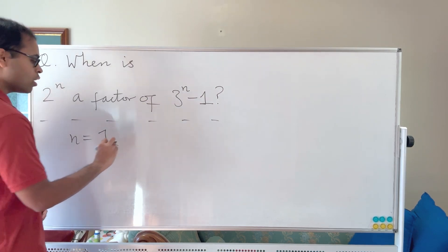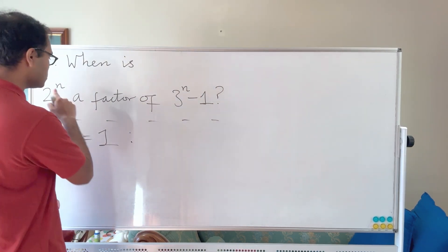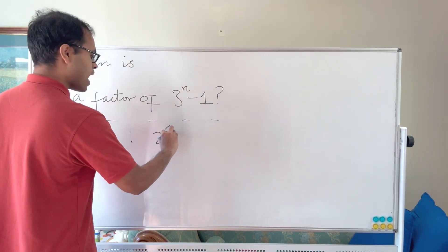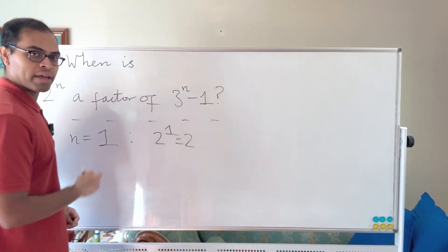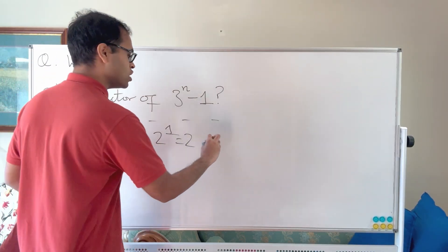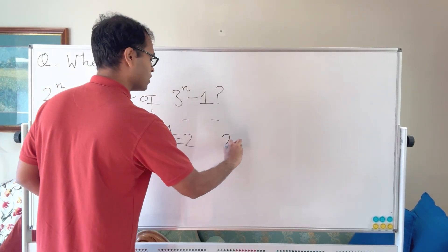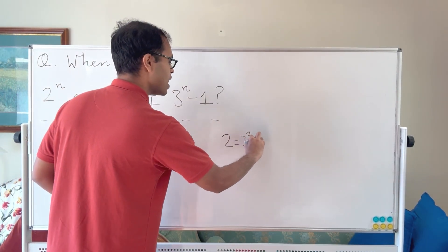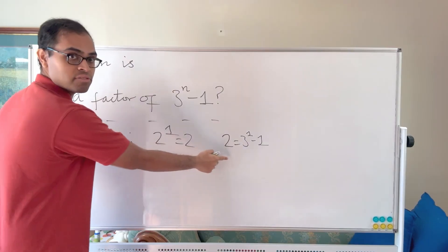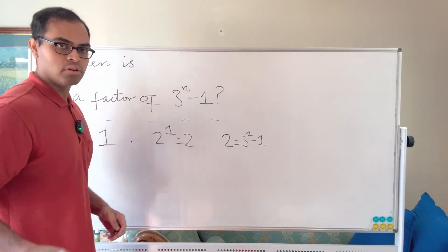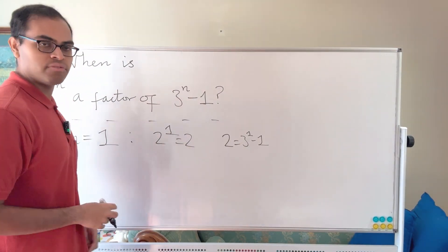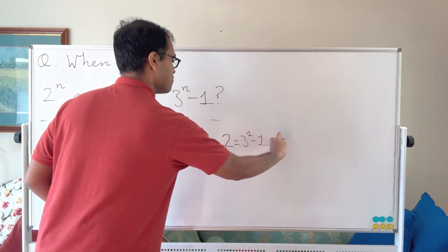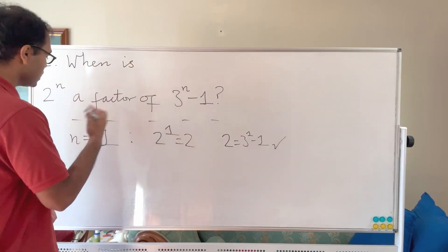For n equals 1, we're looking at 2^1 which is 2, and 3^1 minus 1 which is also 2. So 2 is a factor of 2 — it's a divisor of 2. So n equals 1 is a value for which this is true.